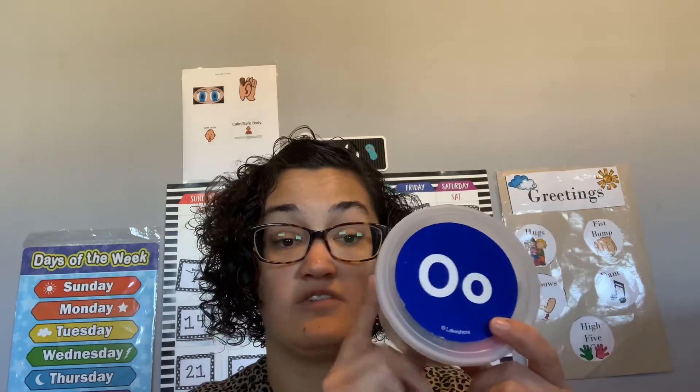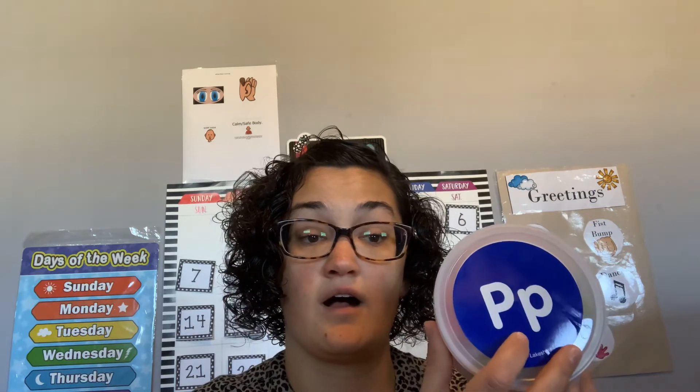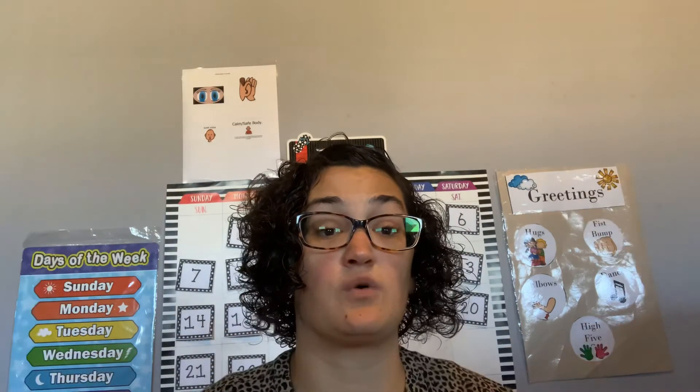For letter review this week, we did the letter O bucket and found my letter O objects. We found my letter P bucket and put my P objects in there. And then we found my Q bucket and put in the objects and toys that begin with the Qu sound. That is it for our letter review. I hope you all have a great day. Bye, everybody!